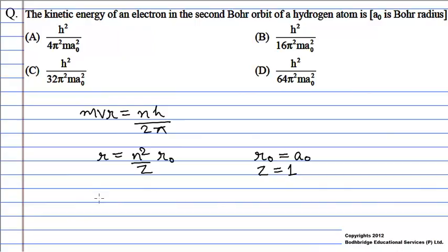For the second Bohr orbit, n equals 2. So substituting the value of n, r₀, and z in the expression for r, we get 2² upon 1 into a₀, which equals 4a₀.